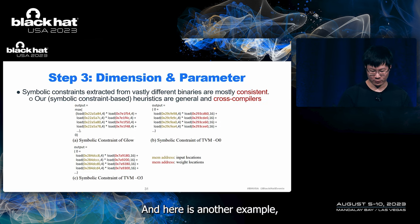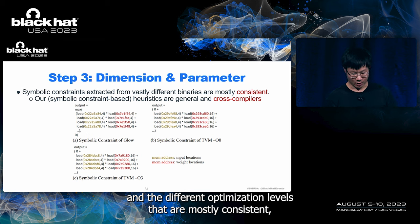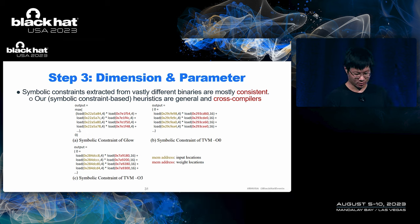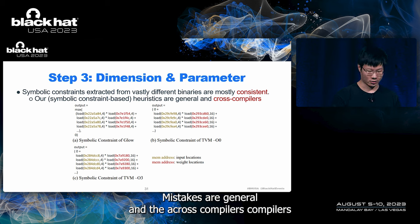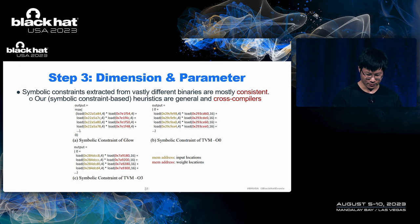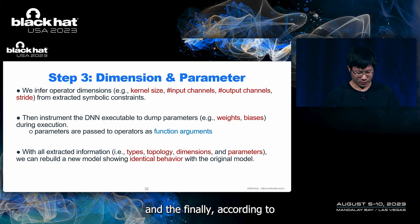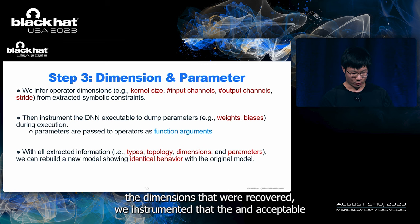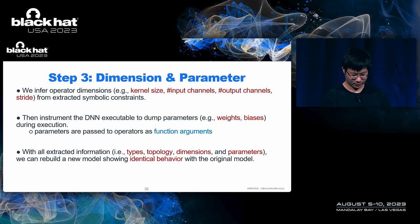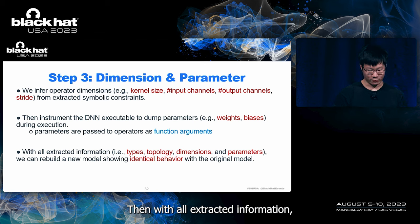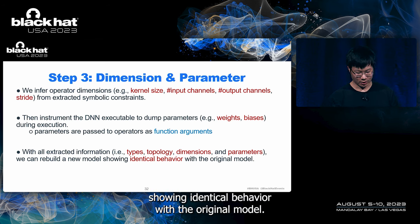Symbolic constraints from different compilers and different optimization levels are mostly consistent. Therefore, our symbolic constraint-based heuristics are general and cross-compiler. According to the dimensions we recovered, we instrumented the DN executable to dump all pre-trained parameters during execution. With all extracted information, we can eventually rebuild a new DN model showing identical behavior to the original model.